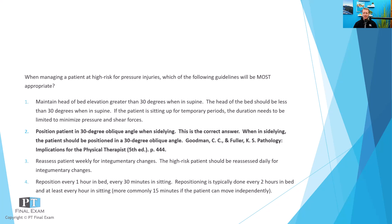Everyone's favorite incorrect answer is repositioning every one hour in bed, when it really should be every two hours. I was asked when would we want to maintain the head of bed higher than 30 degrees — usually in cases of TBI or hemorrhaging in the brain where intracranial pressure is high, or after a CVA. There's also the consideration of orthopnea, like in COPD, where you'd elevate the head of the bed because the patient would have difficulty breathing when in supine.